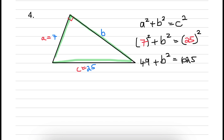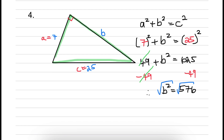That's 25 times 25. Subtract 49 from both sides of the equation to get rid of the 49 on the left-hand side. That leaves us with b squared equal to 576. Taking the square root on both sides: the square root of 576 is 24, and that is the length of b — 24 units. And yes, b had to be less than c, because c is the hypotenuse.